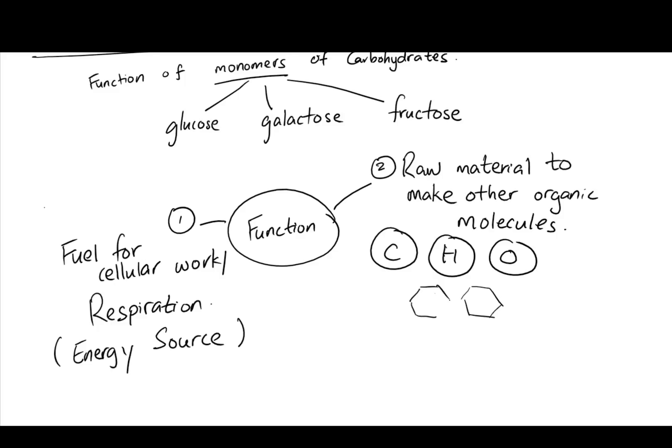Glucose acts as the building blocks for polysaccharides. Next, it is produced by plants through a process called photosynthesis. So glucose or starch is really the food that plants make.